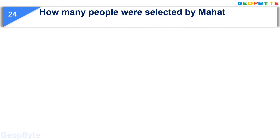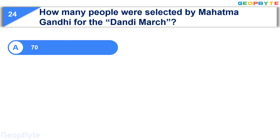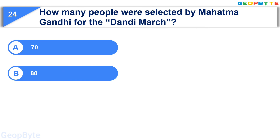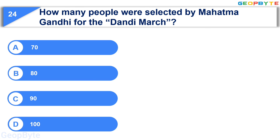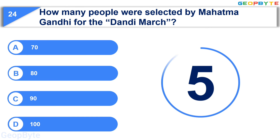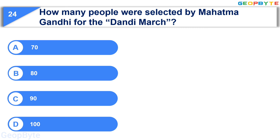Moving to the twenty-fourth question: how many people were selected by Mahatma Gandhi for the Dandi March? Option A: 70, Option B: 80, Option C: 90, Option D: 100. Your time starts now. Your time is up and the correct answer is Option B: 80.